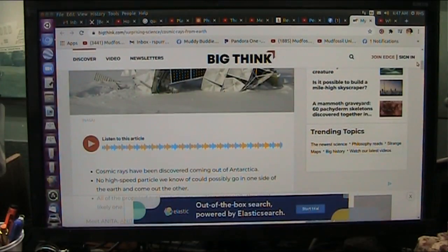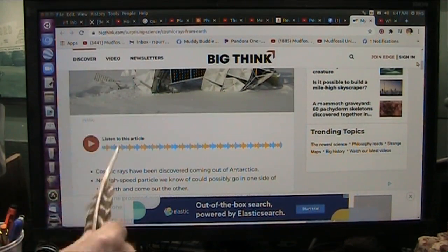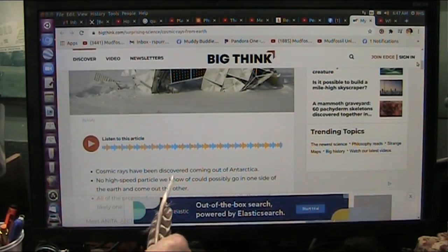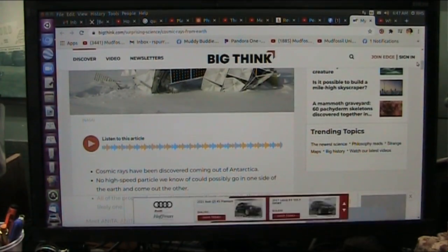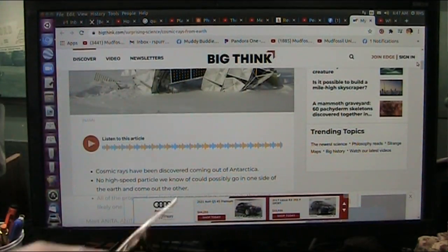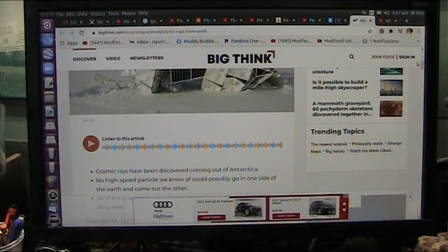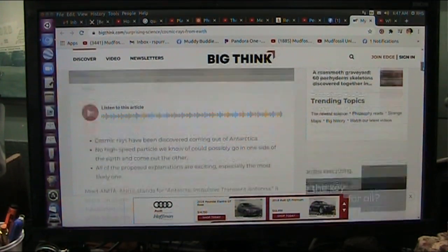Okay, my friends, another exciting day at Mud Fossil University. Cosmic rays detected coming out of Antarctica. They're supposed to come down to the Earth. Why are they coming out of Antarctica? I get these things from everybody every day. Try to explain this big shot.